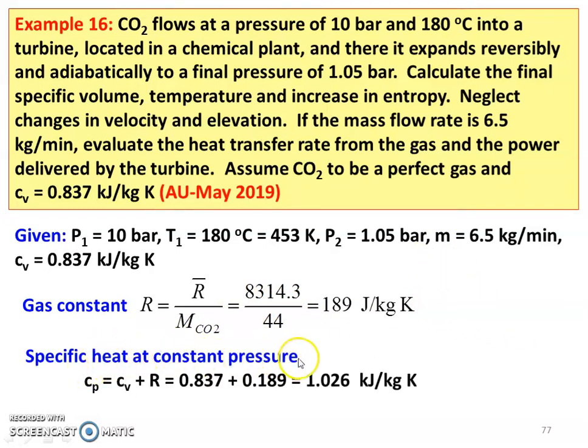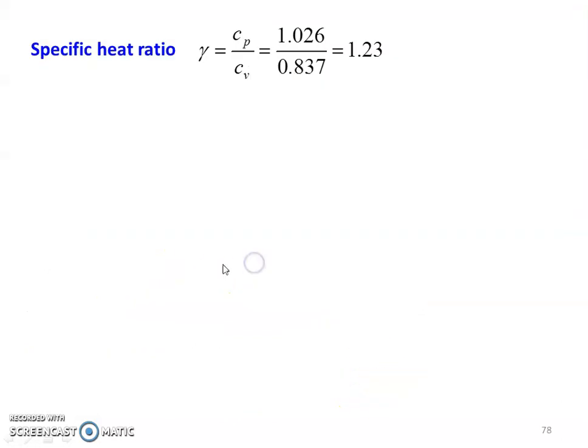The specific heat at constant pressure Cp equal to CV plus R, so 0.837 plus 0.189 equal to 1.026 kJ per kg Kelvin. And specific heat ratio for the carbon dioxide, Cp by CV, which is 1.026 divided by 0.837 equal to 1.23.